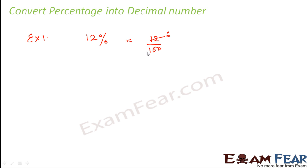So you reduce it to the simplest possible fraction, that is 3 by 25. So this is in the fractional form. Now you convert this fraction into decimal. So this is how we convert it.